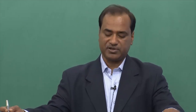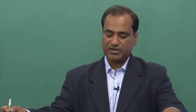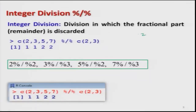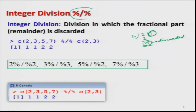The first question is: what is integer division? Integer division is the division in which the fractional part — the remainder — is discarded. For example, if I divide 2 by 2, the answer is 1 and the remainder is 0, so the remainder is discarded. The symbol for integer division in R is the percentage sign backslash percentage sign (%\%). So for 2 integer-divided by 2, I write 2 %\% 2, which gives the answer 1.